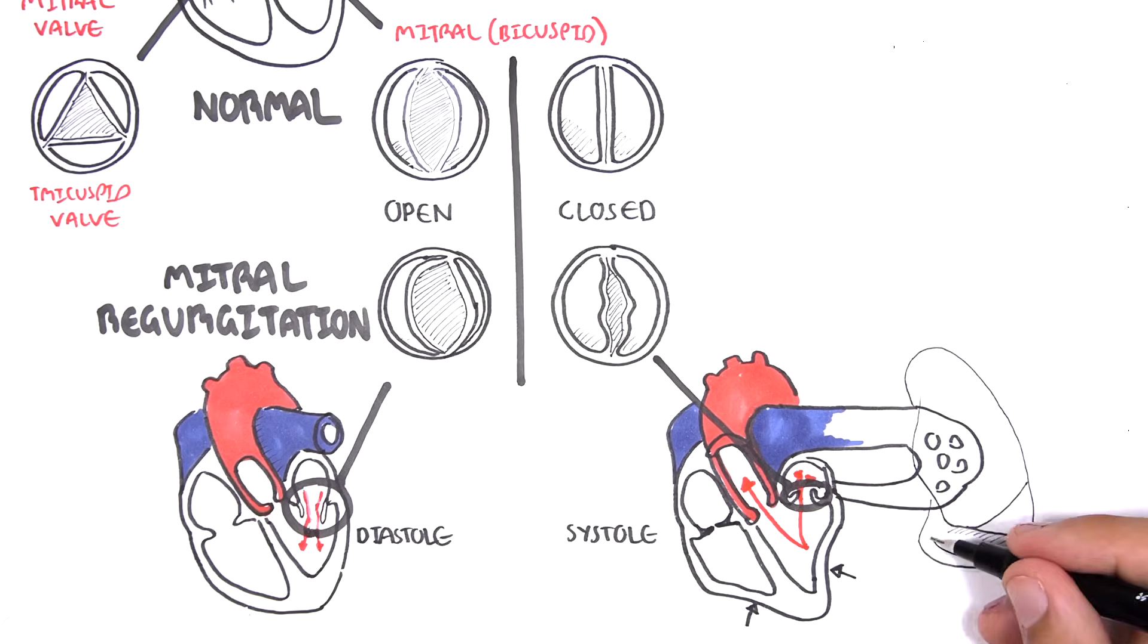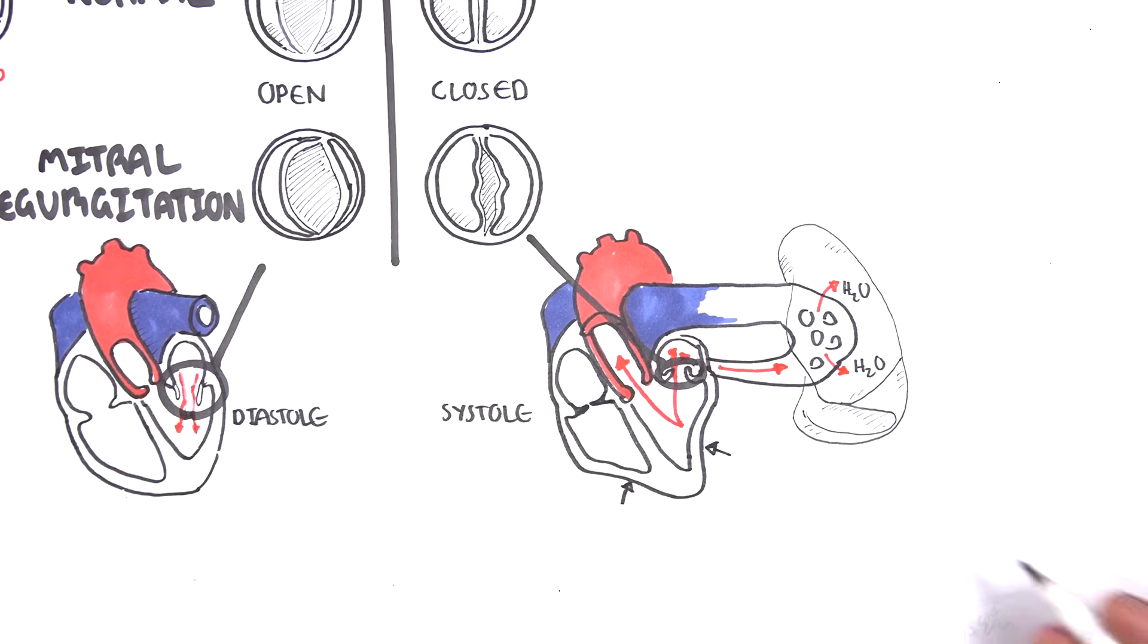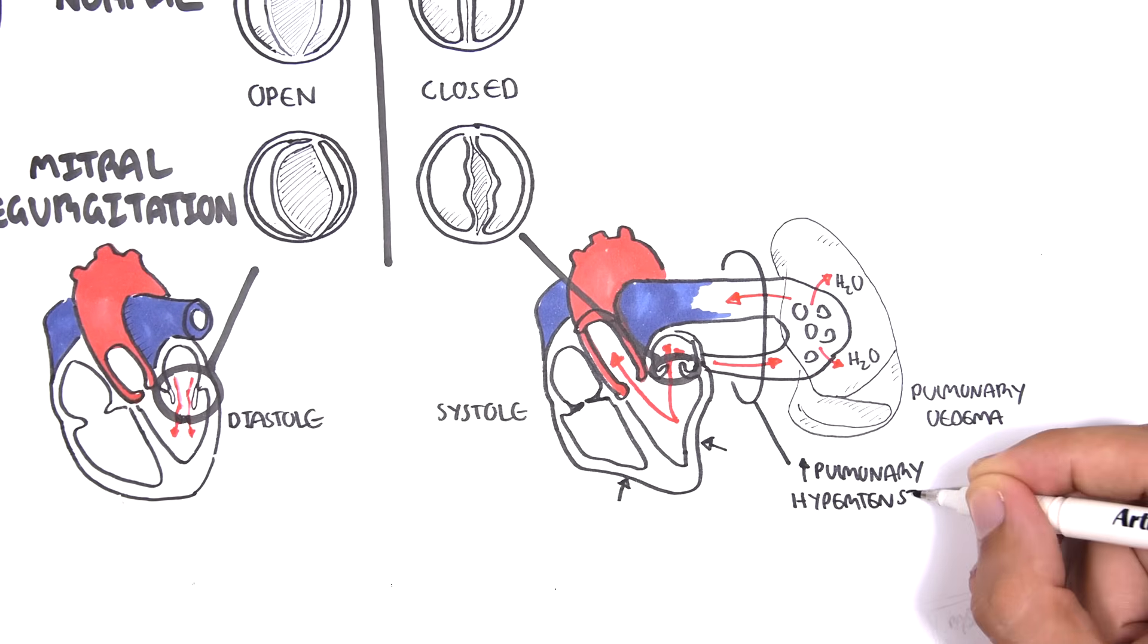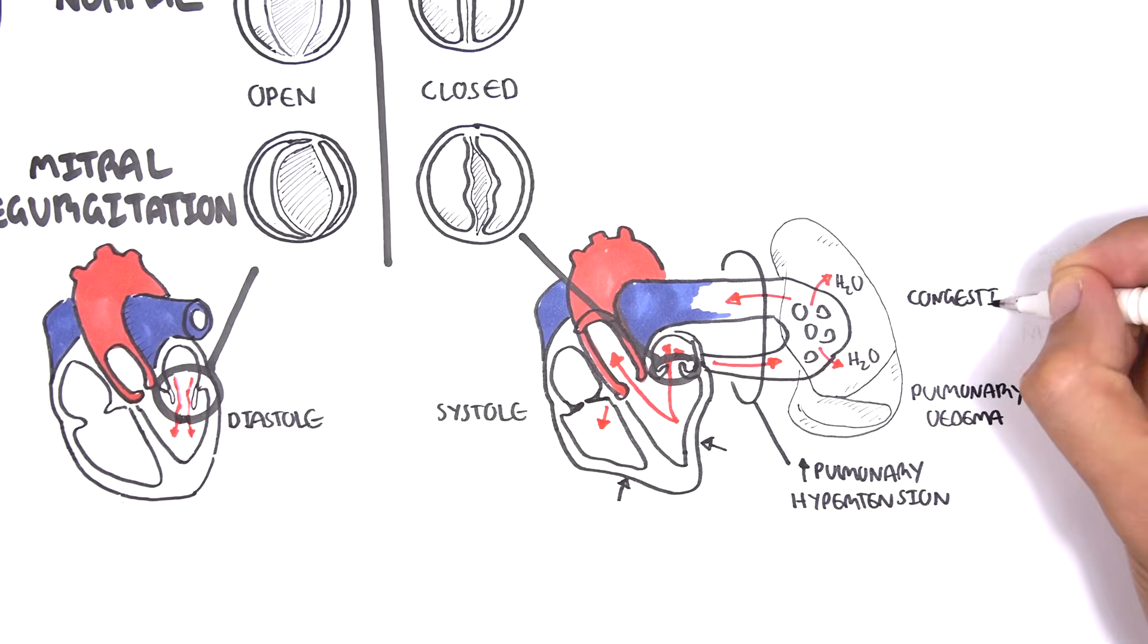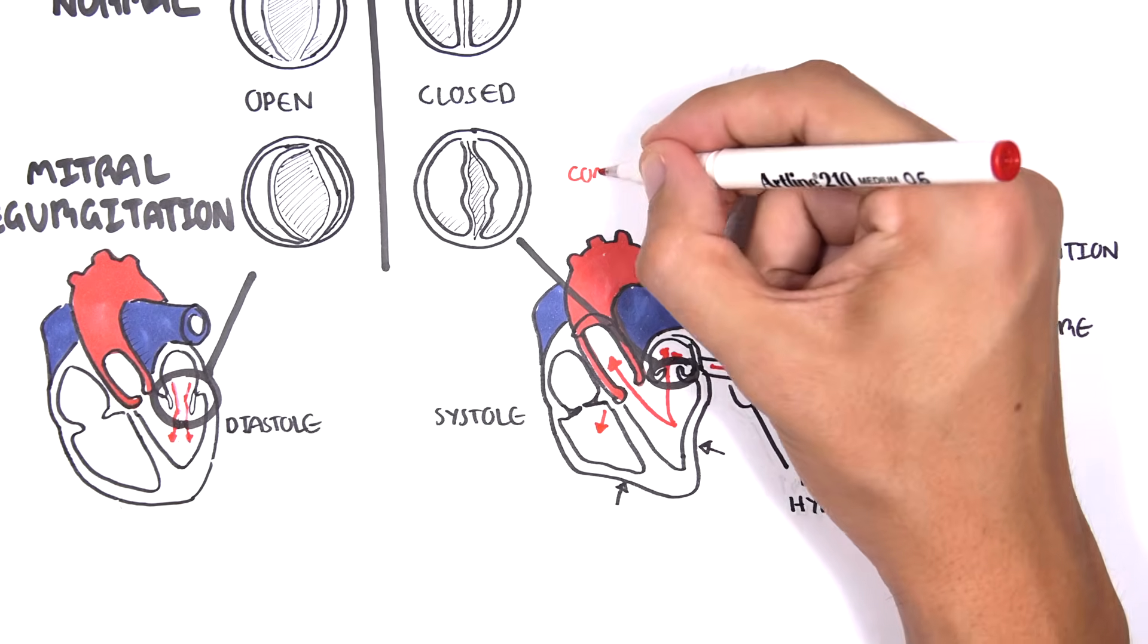In mitral regurgitation, blood can travel back towards the pulmonary system, resulting in pulmonary edema. We have increased pulmonary vascular pressure, which can lead to congestive heart failure and cor pulmonale. Another common complication with mitral regurgitation is the development of atrial fibrillation.